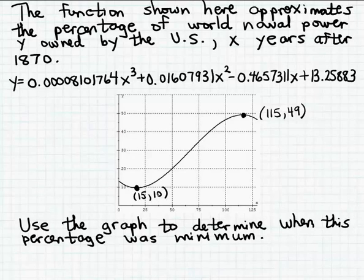So it's this local minimum that we can actually use to answer our question. The minimum percentage of world naval power that was owned by the United States was 10%, and that occurred 15 years after 1870. So that would be in about 1885.